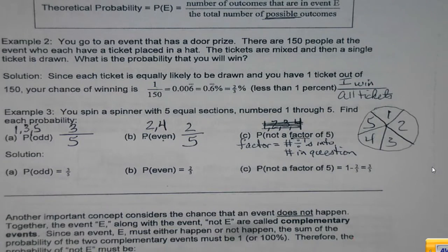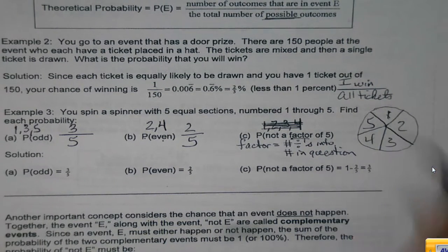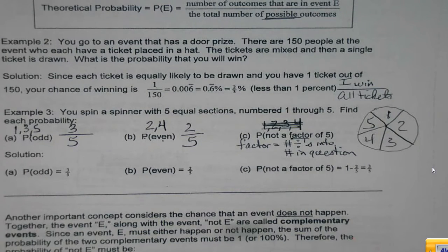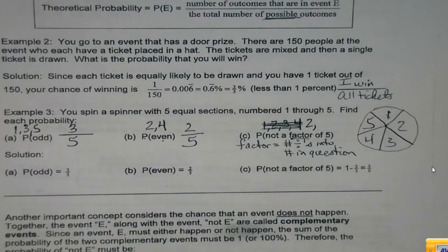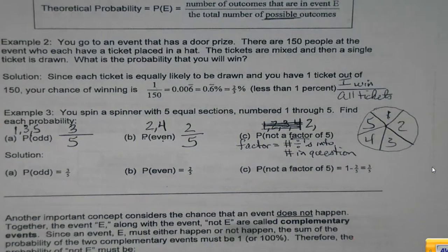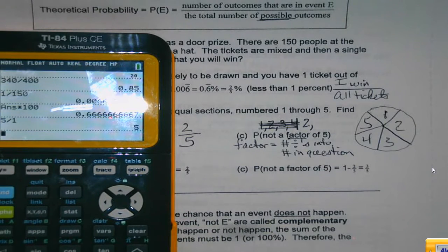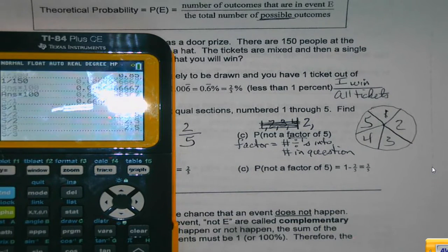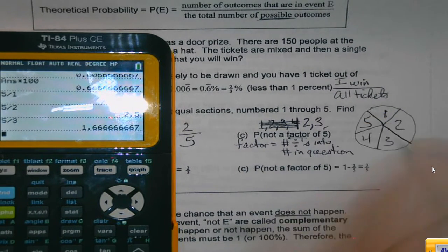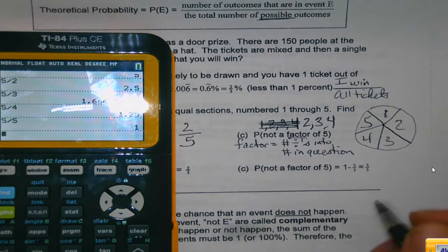So for instance, is one a factor of five? Will one divide into five? Yes, it will. Does two divide evenly into five? No, it doesn't. And again, if you're wondering, you just kind of can play. Five divided by one, whole number, cool. Five divided by two? Nope. Five divided by three? Nope. Five divided by four? Nope. Five divided by five? I hope so. It's the same number.